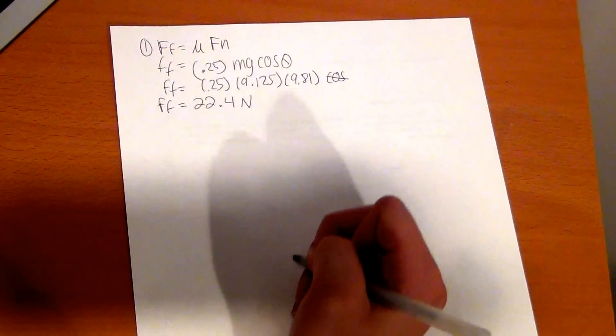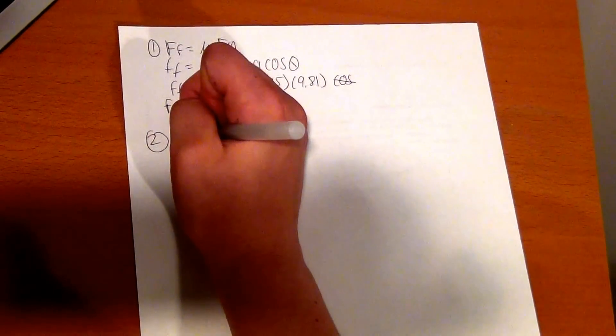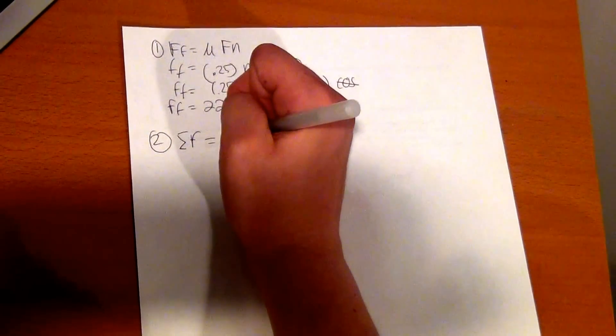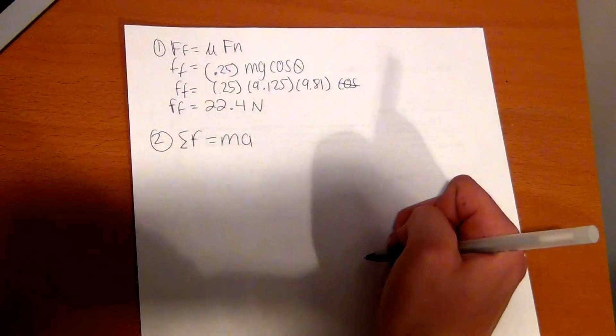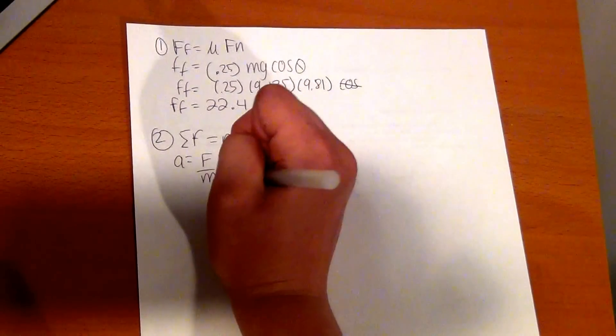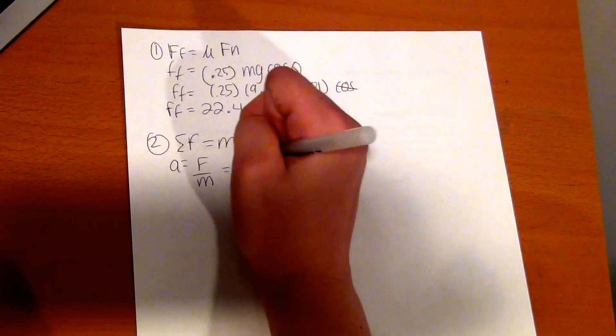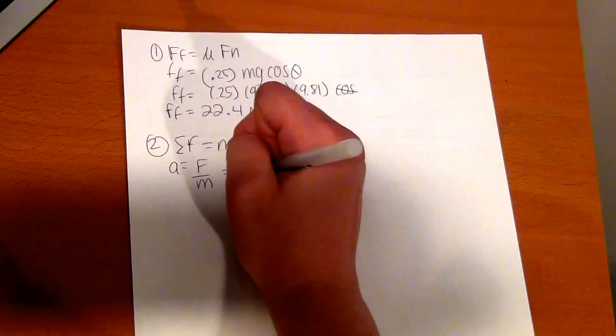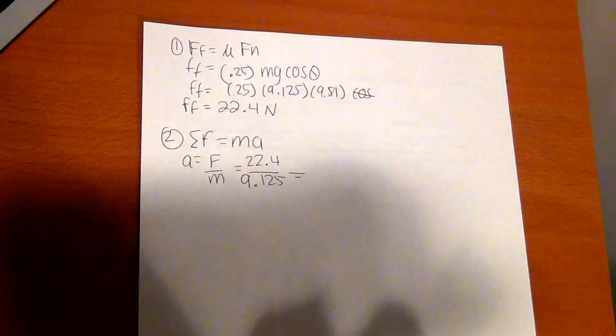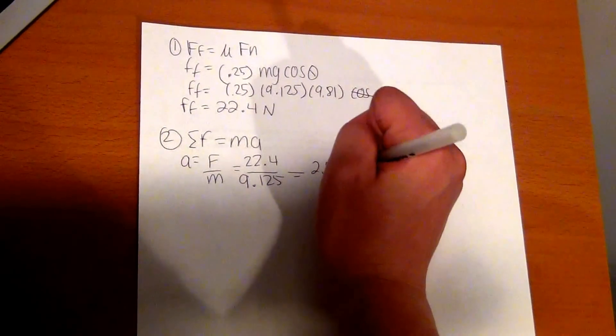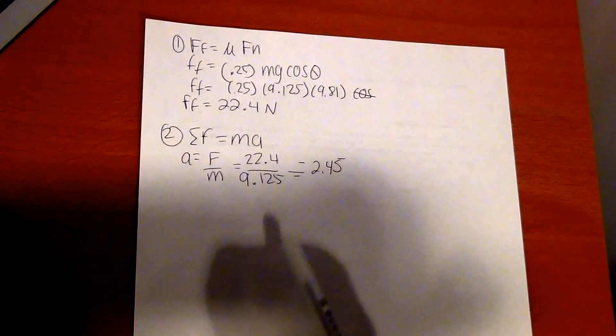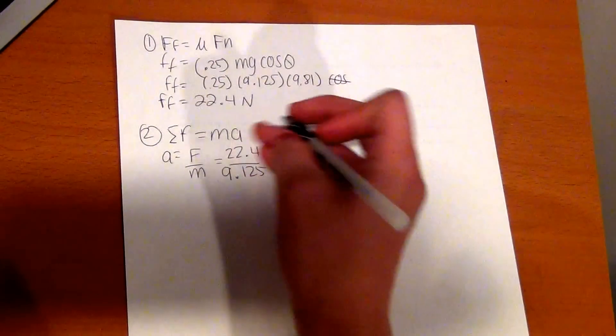So that's the first step. The second step is to define the acceleration. You use the formula for the net force, so ΣF equals mA. Since we know what the mass is but we don't know what the acceleration is, solve for A: A equals F over m. Since we know what the force is, we can plug that number in—22.4 for the Fn and m is 9.125. Then you divide these two numbers and we get 2.45. But we want to make this negative 2.45 because the acceleration is slowing down. That is your second step.